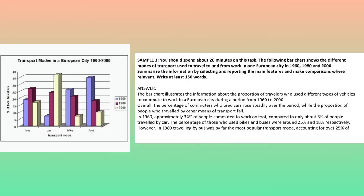The following bar chart shows the different modes of transport used to travel to and from work in one European city in 1960, 1980, and 2000. Summarize the information by selecting and reporting the main features and make comparisons where relevant. Write at least 150 words. The bar chart illustrates the proportion of travelers who used different types of vehicles to commute to work in a European city during a period from 1960 to 2000.